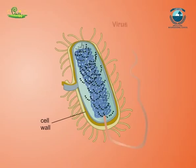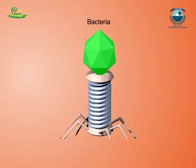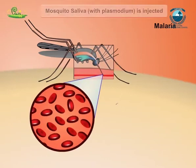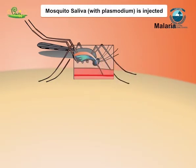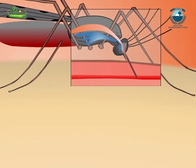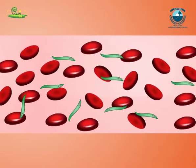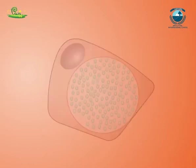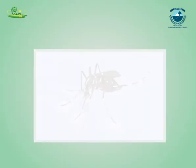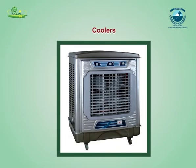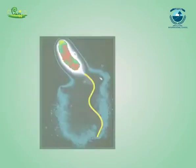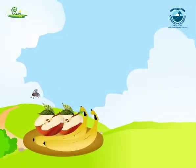Protozoa, viruses, and bacteria are the sources of many diseases in human beings. Malaria is caused by Plasmodium, which is a protozoan. Plasmodium lives inside the female Anopheles mosquito, which feeds on human blood. A female Anopheles bite injects the malarial parasite into the person's blood. Plasmodium multiplies in human blood and causes malaria. Mosquitoes breed in water, so one should not let water collect in coolers, tires, flower pots, etc. Cholera is caused by the bacterium Vibrio cholerae and spreads by means of contaminated water or food.